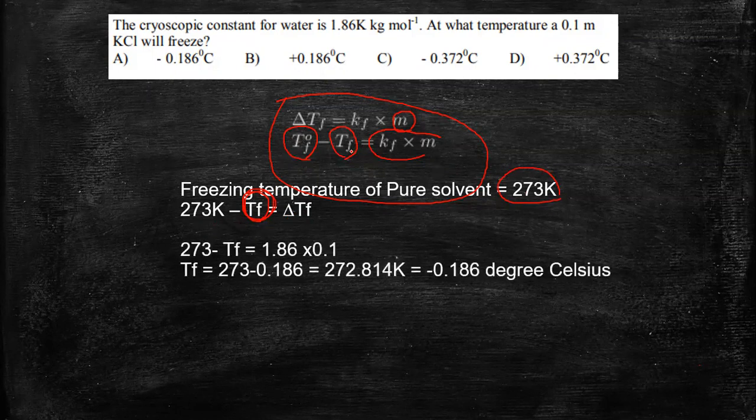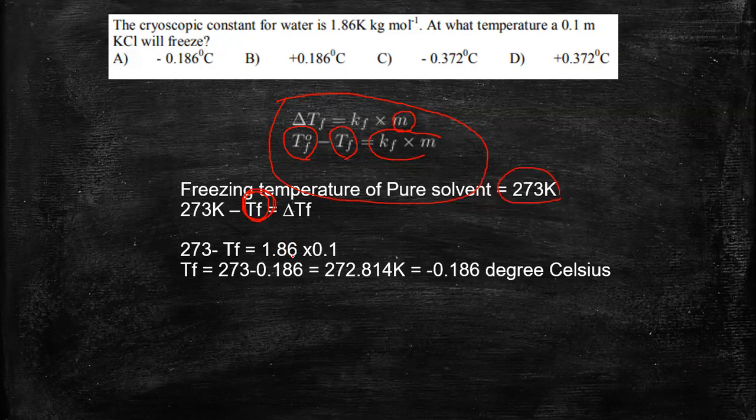Now let's substitute it in this equation. Our cryoscopic constant Kf is given already, which is 1.86. So 273 minus Tf is equal to 1.86 into 0.1. So Tf is equal to 273 minus 0.186, which is 272.814 Kelvin.